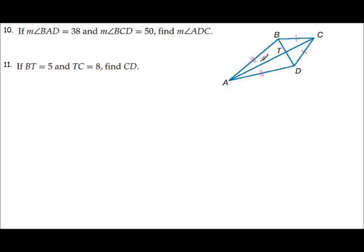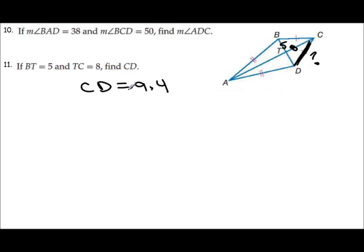Number 11: if BT is 5 and TC is 8, we want to find CD. Pause the video and see if you get what I get for the length of CD. You should have gotten 9.4.